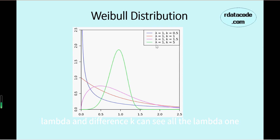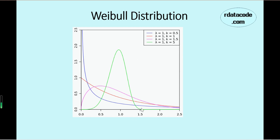You can see all curves have lambda equals 1. If k equals 1, this is an exponential distribution. If k equals 5, the curve becomes bell-shaped. If k is very large, it will resemble a normal distribution. Also, if we let k equal to 1, the Weibull distribution becomes the exponential distribution, and if k is larger than 1, the curves become more bell-shaped.